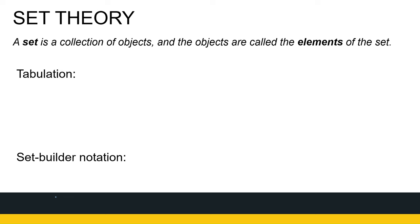A set is a collection of objects. The objects are called elements of the set. There are different ways to denote sets. One is what we call tabulation. So let's give this set a name — we call it set A, and capital letters are very often used to name sets. So if set A is the set with the numbers 1, 2, 3, and 4 in it, we call this way of writing a set tabulation.